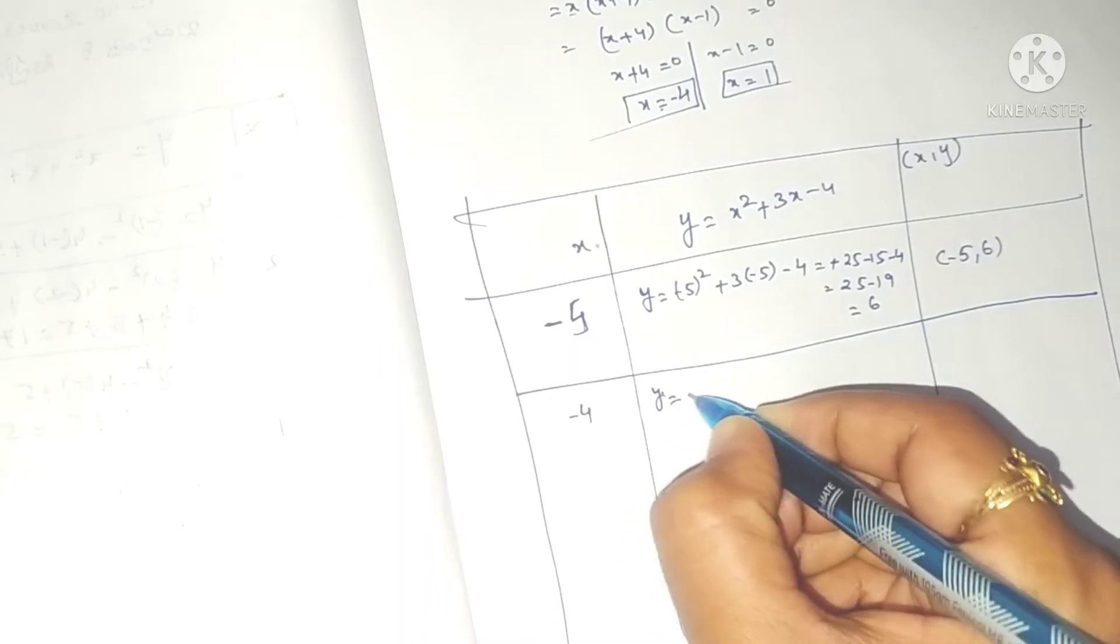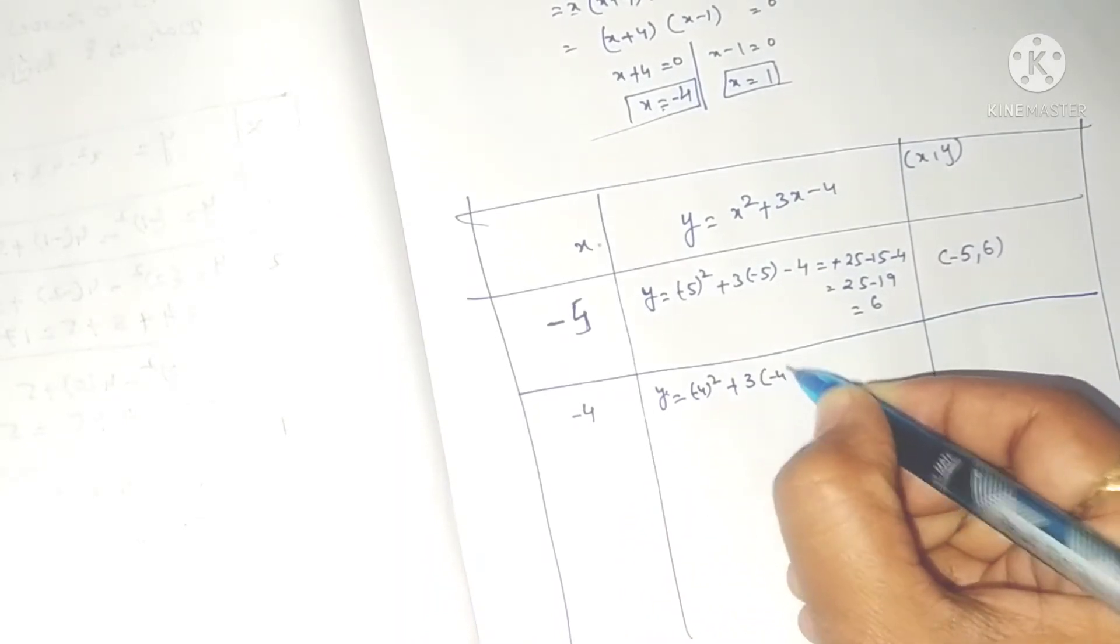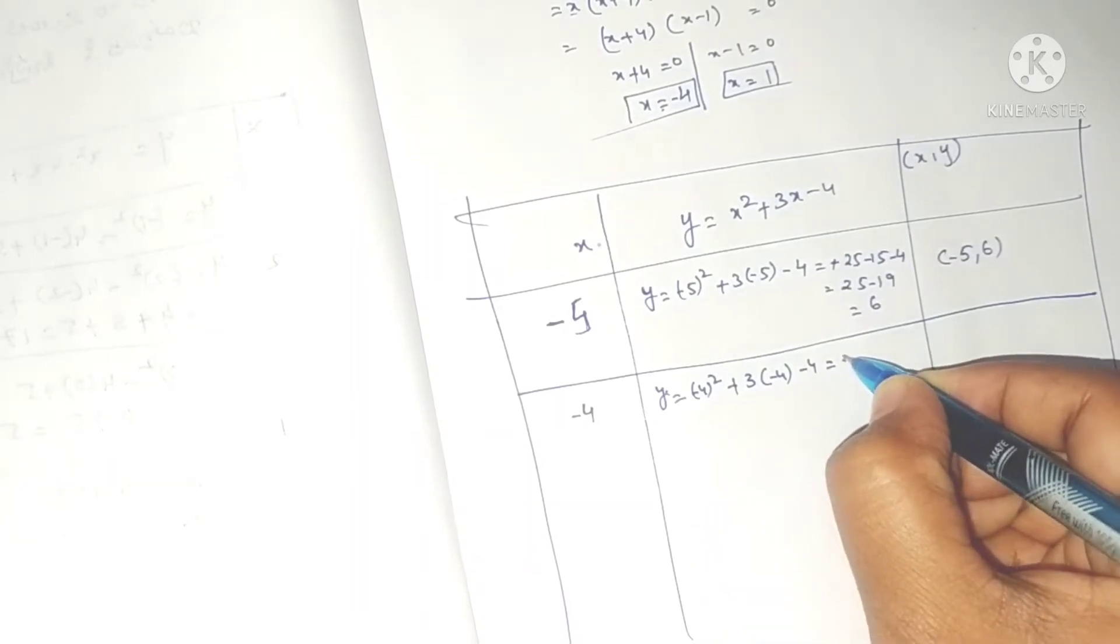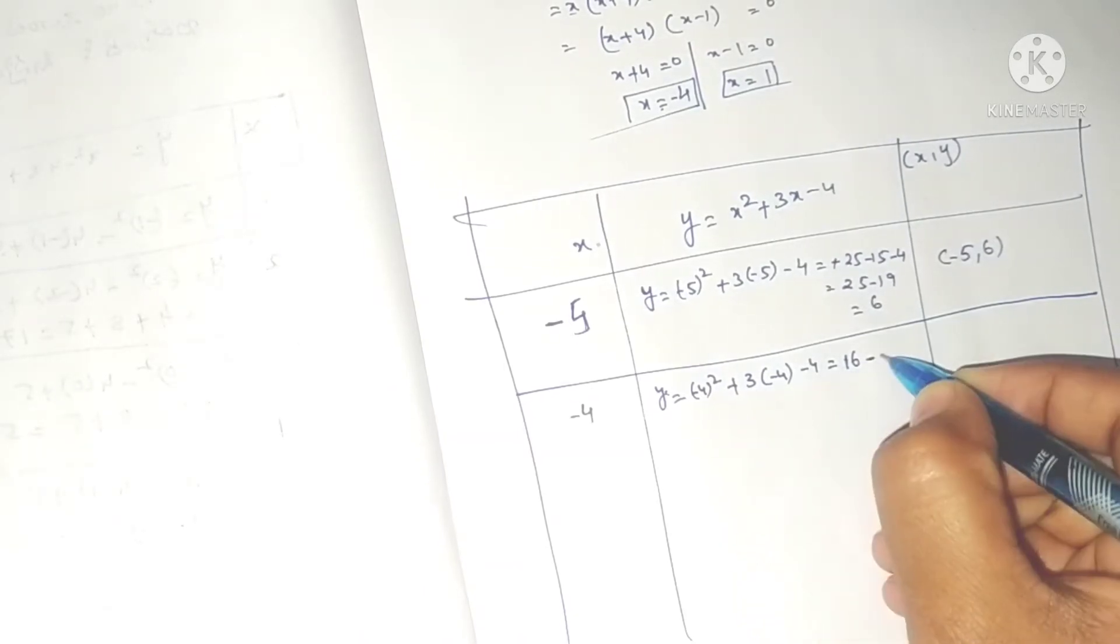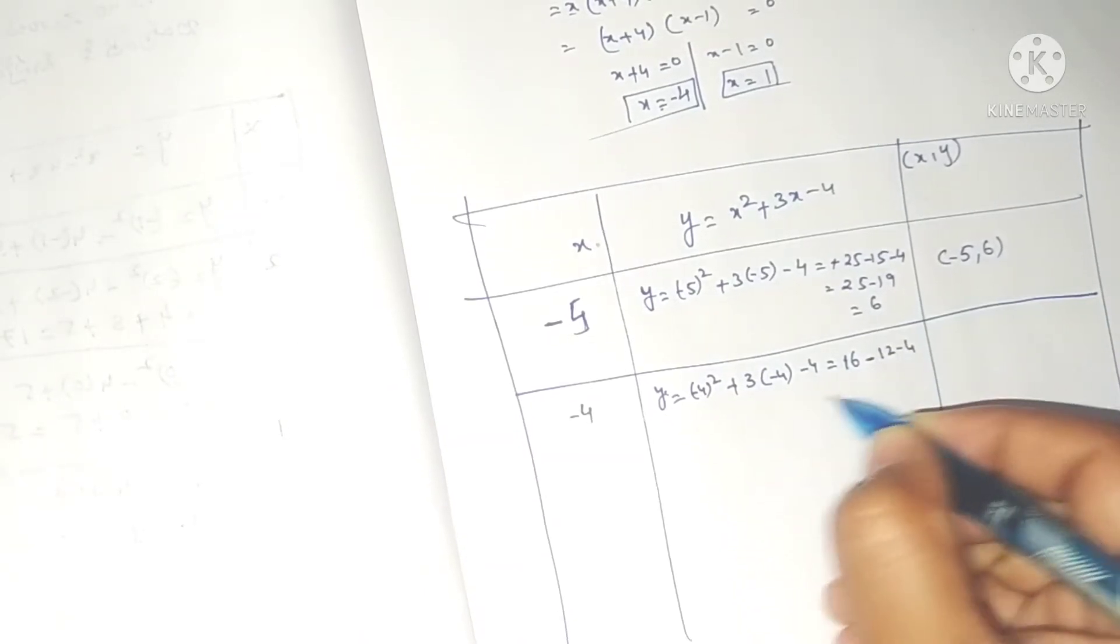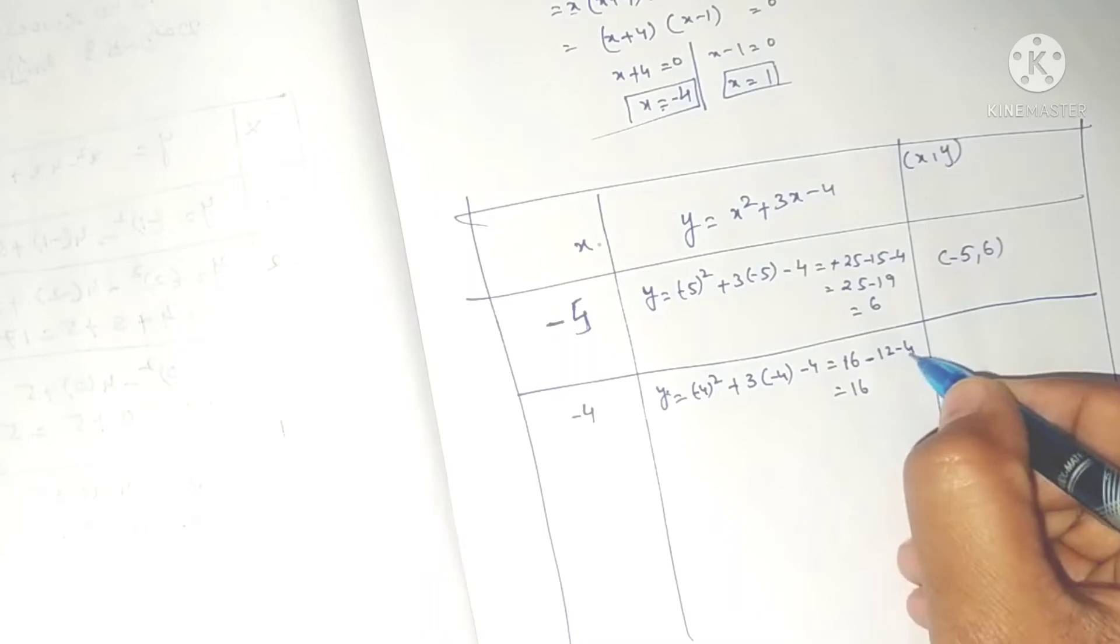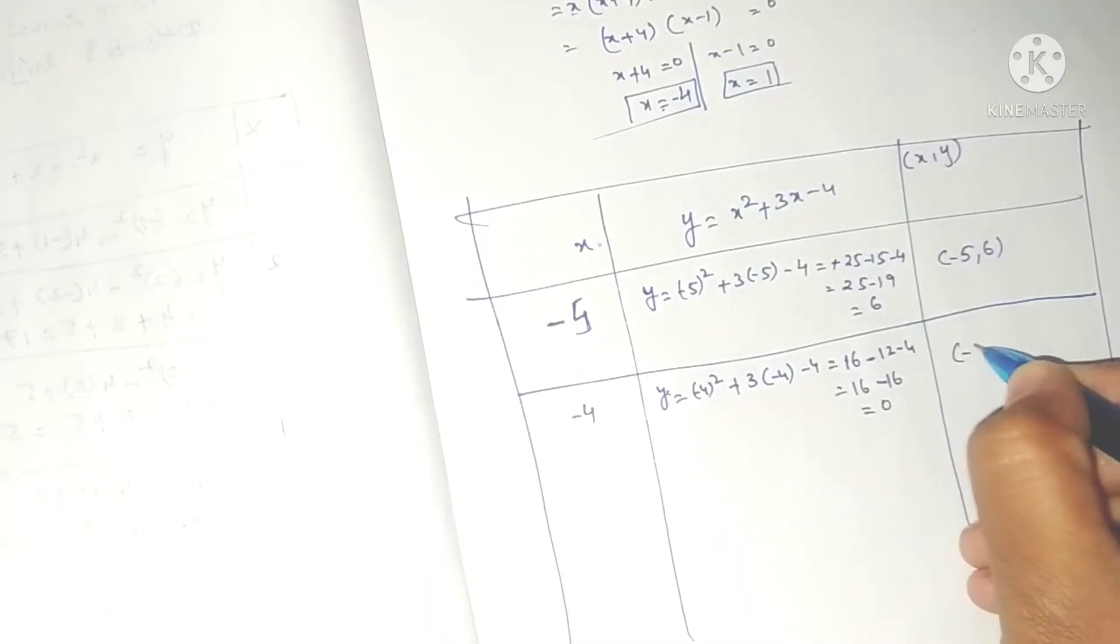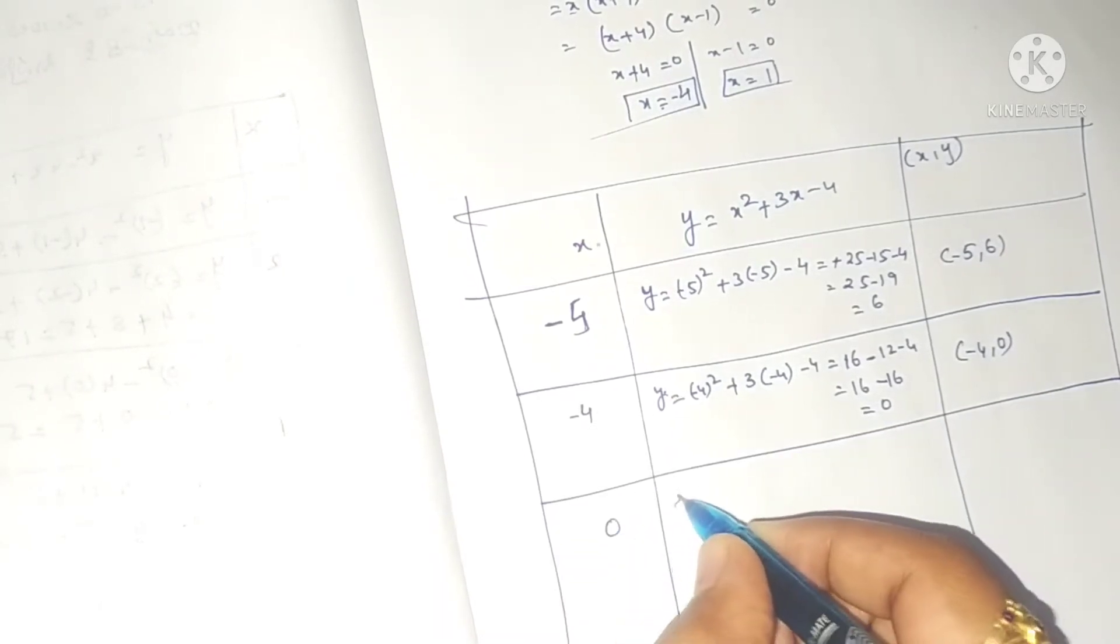Next, minus 4. Y equals minus 4 whole square plus 3 into minus 4 minus 4. That's 16 minus 12 minus 4 equals 0. So the point is minus 4 comma 0.